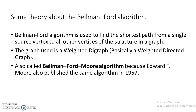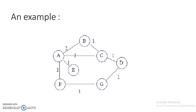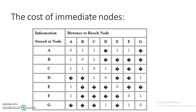The Bellman-Ford Algorithm is used to find the shortest path from a single source vertex to all other vertices in a graph. The graph used is a weighted digraph — basically a weighted directed graph. It is also called the Bellman-Ford-Moore algorithm because Edward F. Moore also published the same algorithm in 1957. This is an example of it.